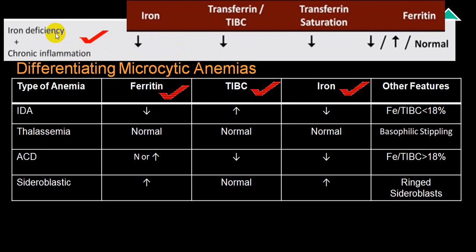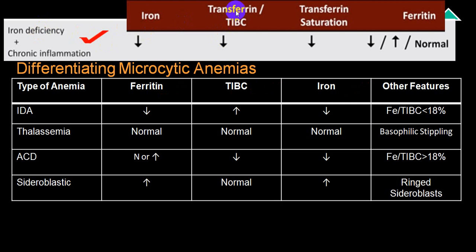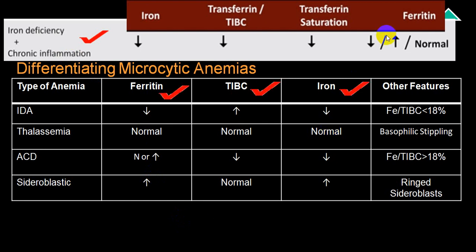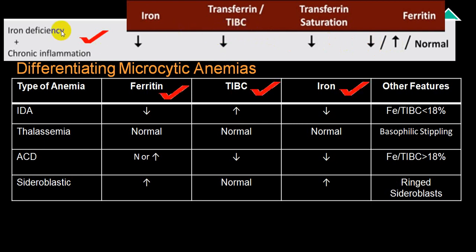When a patient has both iron deficiency anemia and chronic inflammation, interpretation becomes difficult. Because of iron deficiency, iron level will be low; but TIBC — which is normally high in iron deficiency — will also be low due to the chronic inflammation. This is an important clue: in the presence of low iron level and low ferritin, if TIBC is also low, suspect iron deficiency is present alongside anemia of chronic inflammation. Ferritin in that person may be low or high — high because of anemia of chronic duration. So if TIBC is low in what appears to be iron deficiency, suspect associated anemia of chronic inflammation or chronic disease.